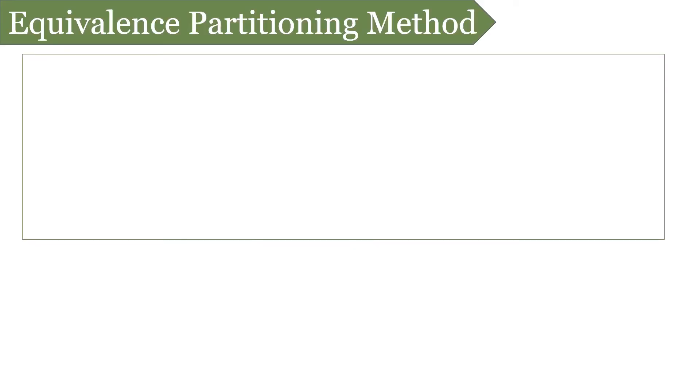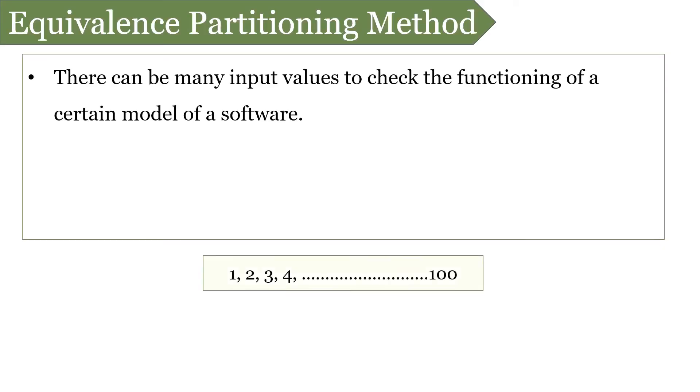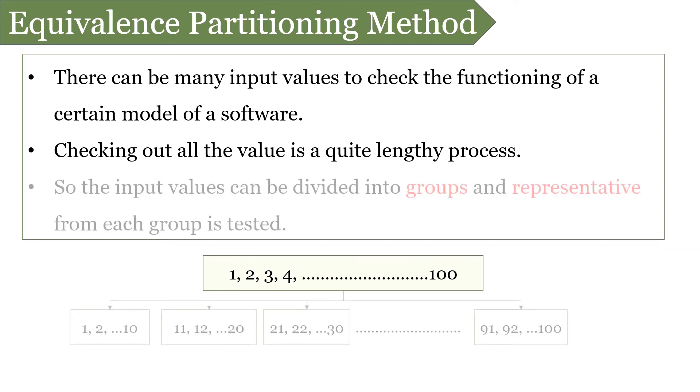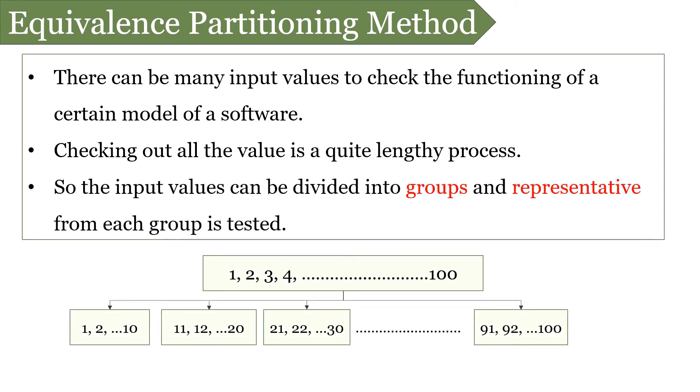Equivalence partitioning. The range of input values that can check the functioning of the software can be too high. Checking out each possible input value might be a lengthy process. So the tester divides the range of input values into groups and then tests a representative from each group.